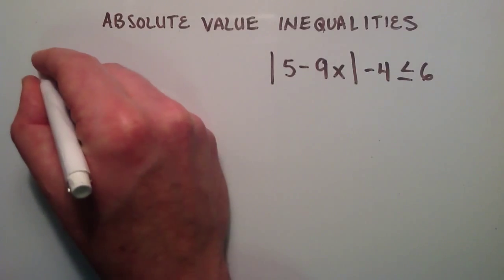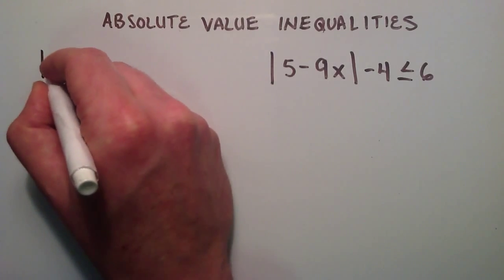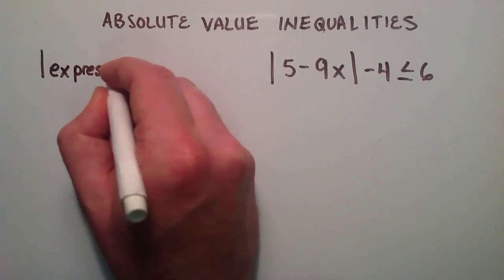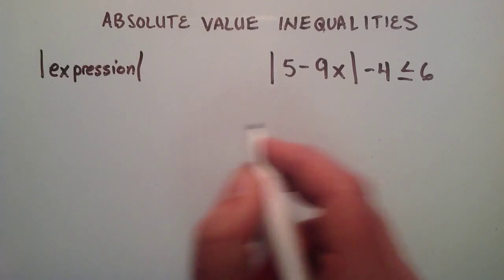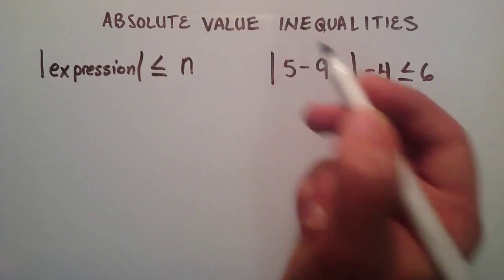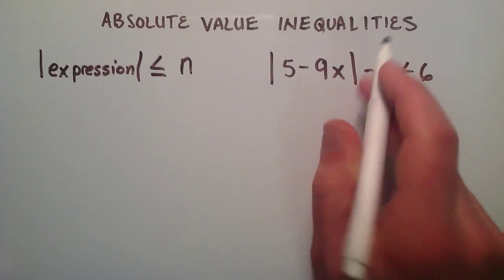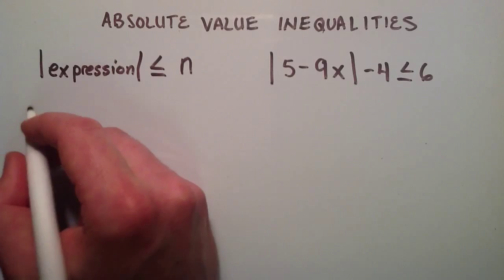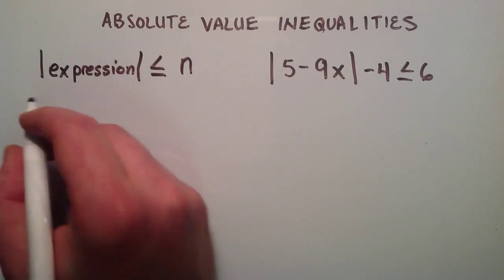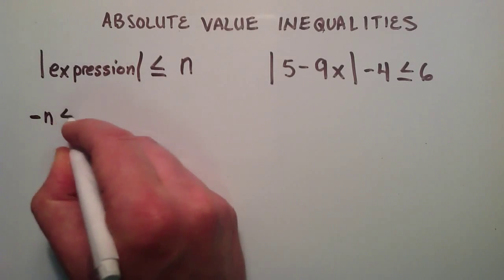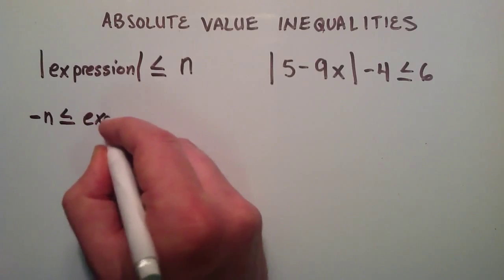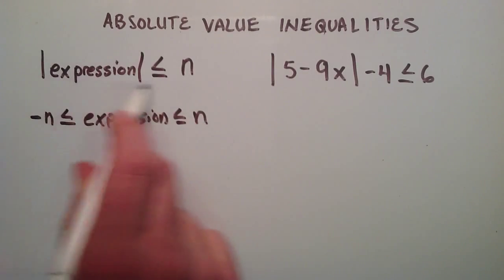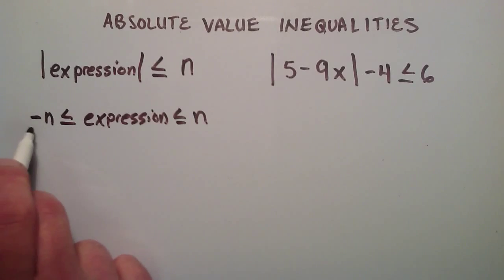We're going to approach the same form as we had in the previous tutorial. What we want to get this absolute value inequality into is a form where we have some absolute value of some expression, and we want that to be less than or equal to some number n. Right now we don't quite have it in this form — if this 4 was gone, we would, but since we have this extra term, it's not quite there. If we have an absolute value inequality in this form, then we can start finding our solution by saying negative n is less than or equal to our expression, and that is less than or equal to a positive n.